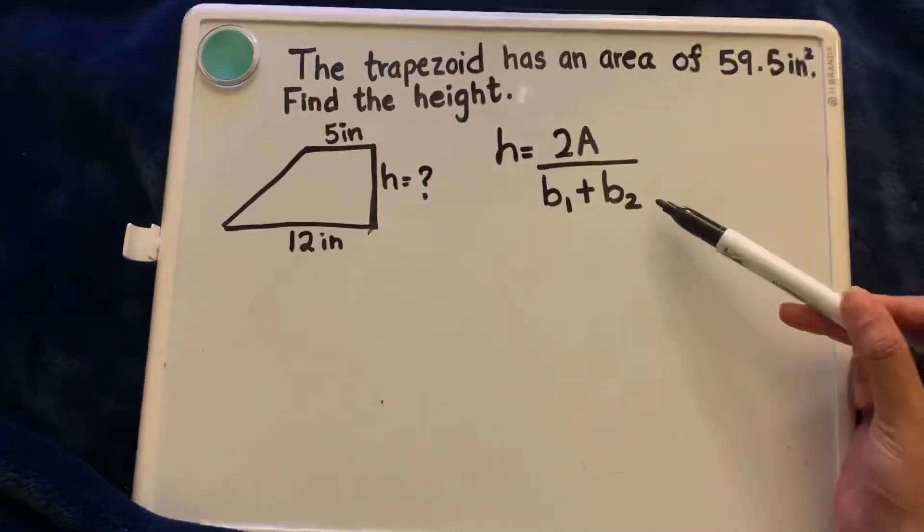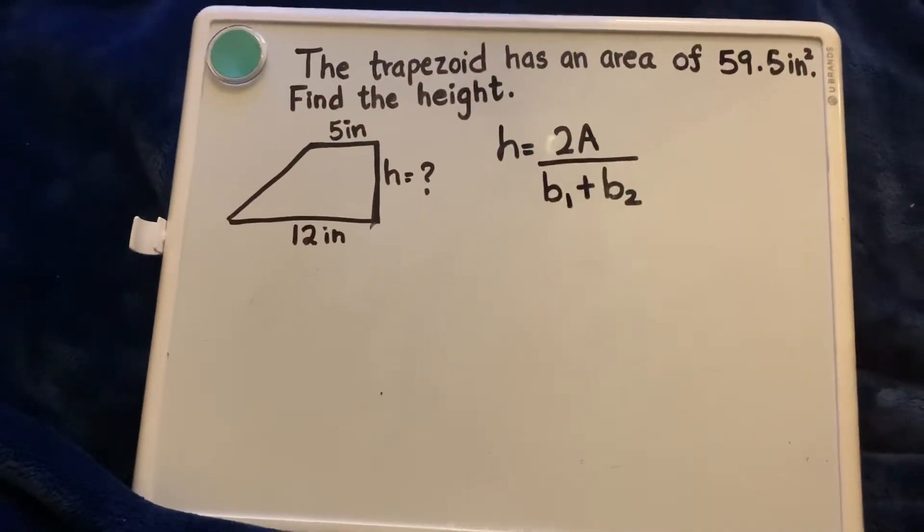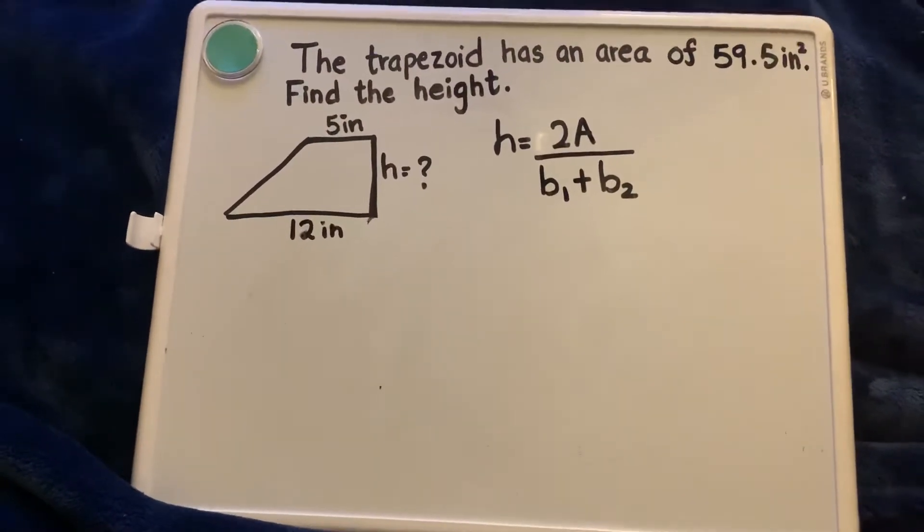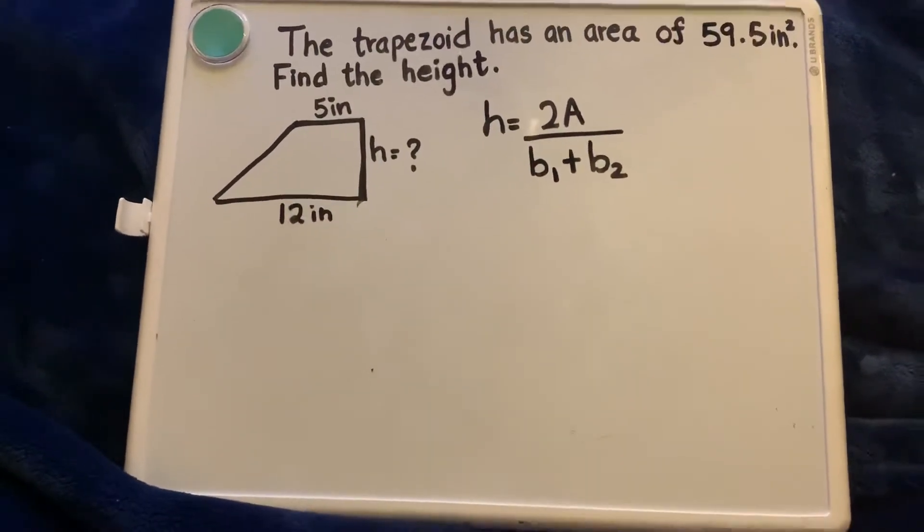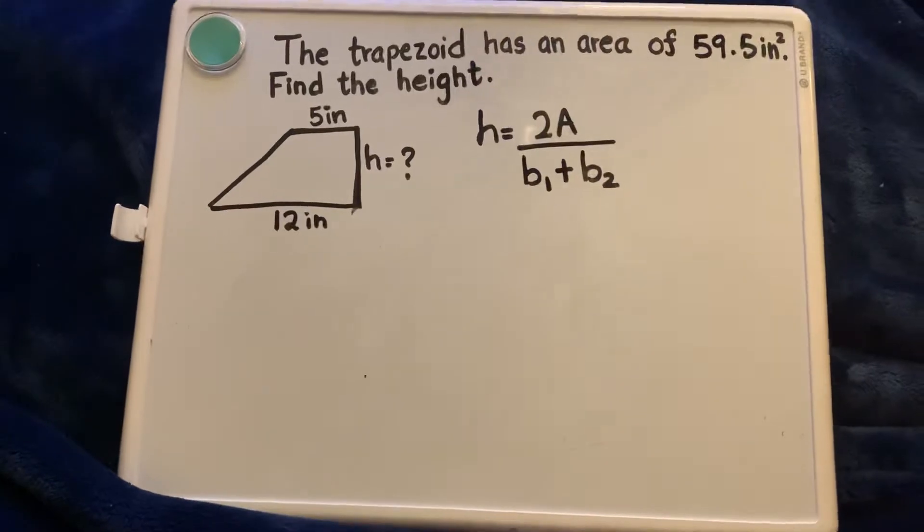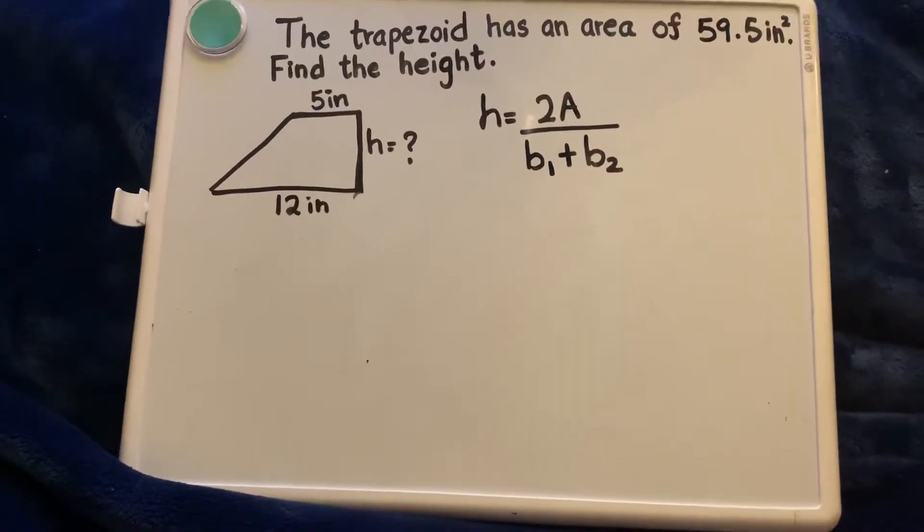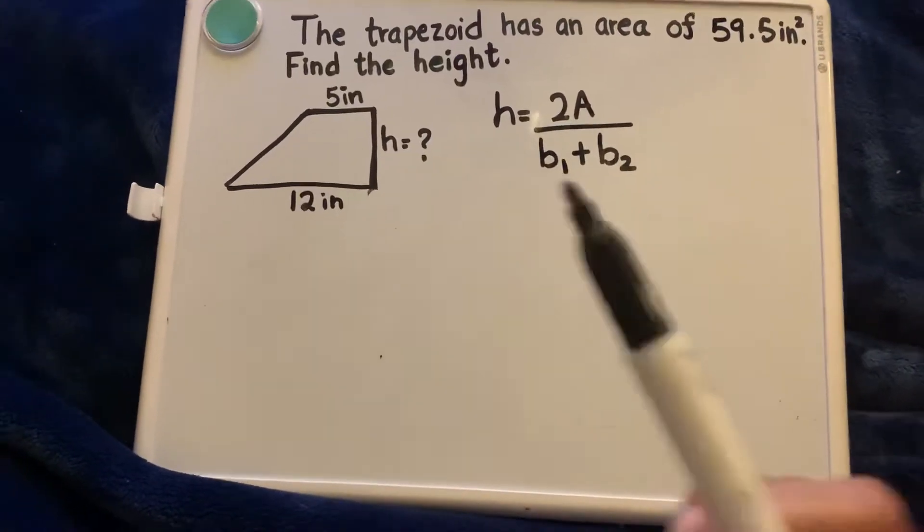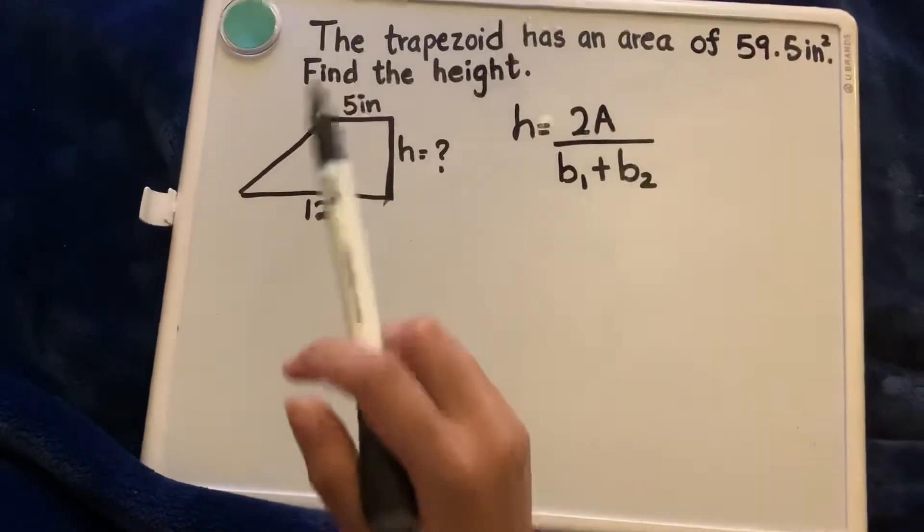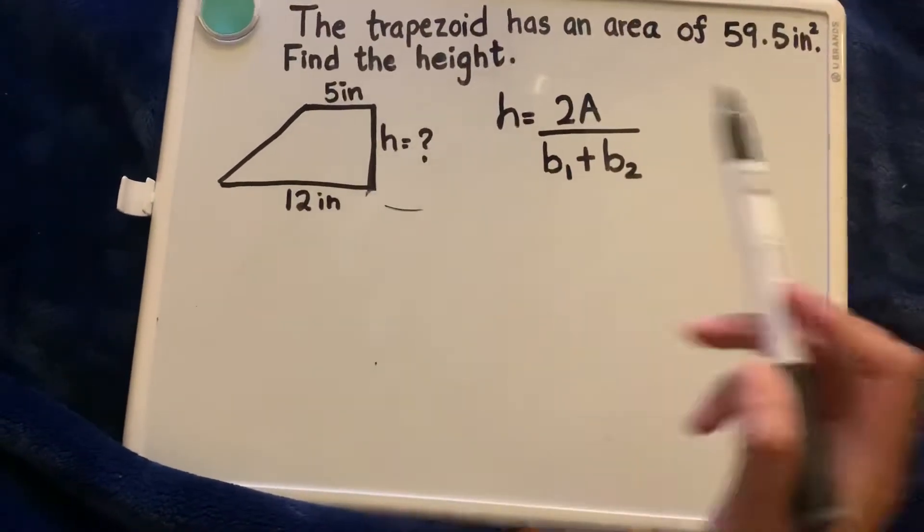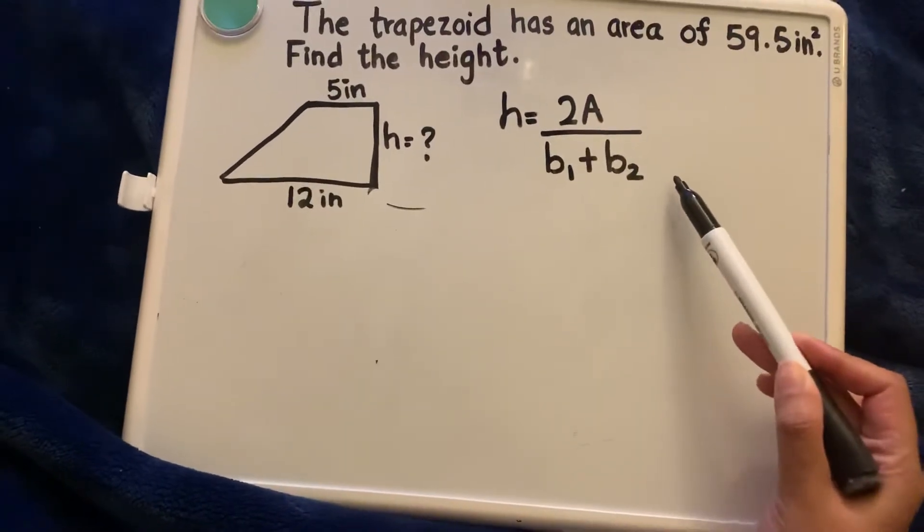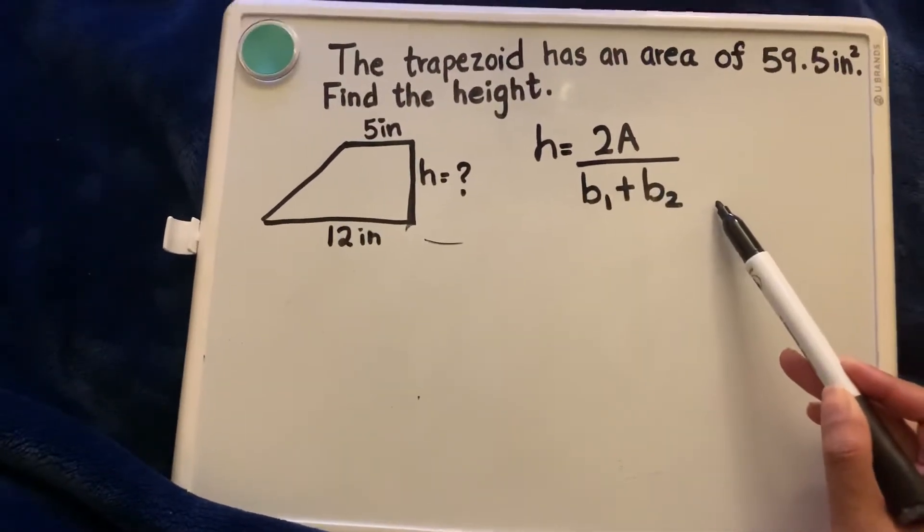Luckily we have a formula that we can utilize to find the height. So we're going to begin with this example. The trapezoid has an area of 59.5 square inches. Find the height. As you can see, the two bases are 5 inches and 12 inches and the height is what we are looking for. We will be using this formula right here to find our answer.